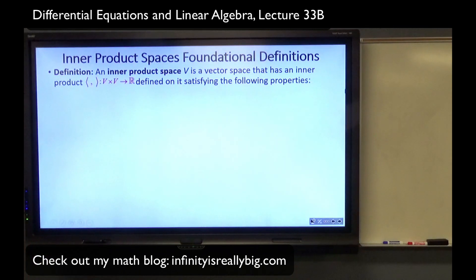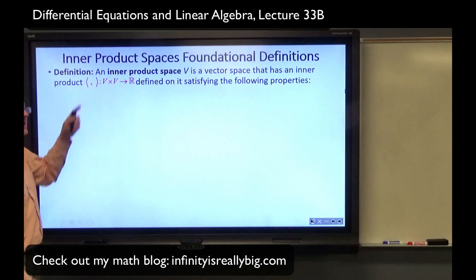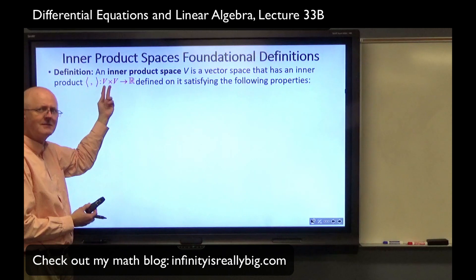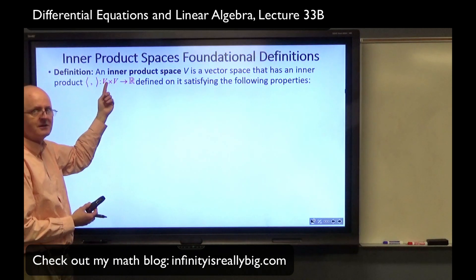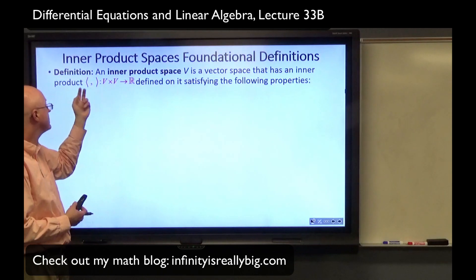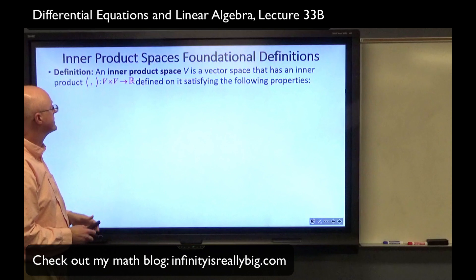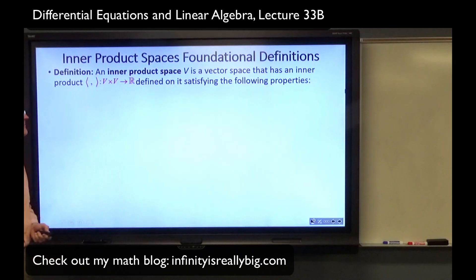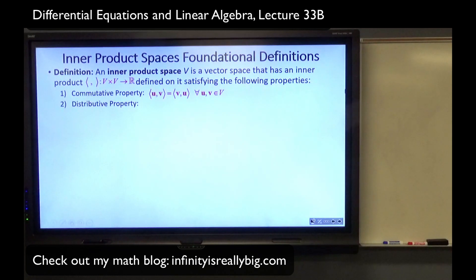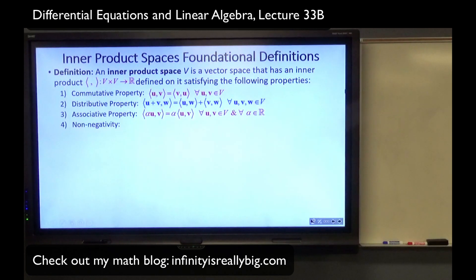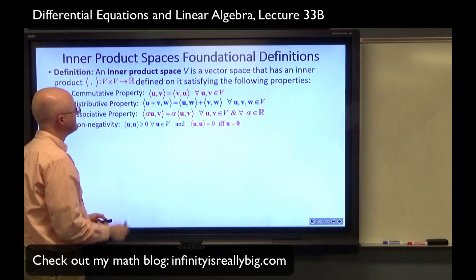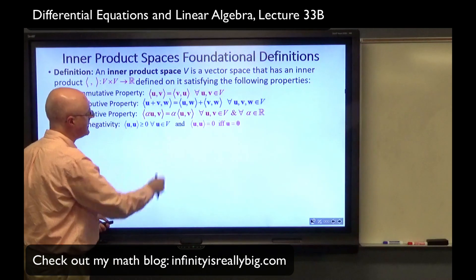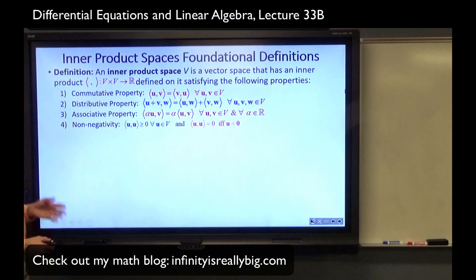An inner product on a vector space — an inner product space V — is a vector space that has an inner product defined in it. This is a function taking an ordered pair of inputs, one vector from V in the first coordinate and another vector from V in the second coordinate, using pointy brackets traditionally, and giving you a number as output. It satisfies a commutative property, a distributive property, an associative property, and non-negativity. If you take the inner product of a vector with itself, you get something non-negative, and in fact it equals zero only when the vector is the zero vector.